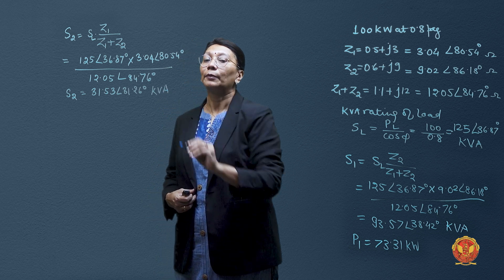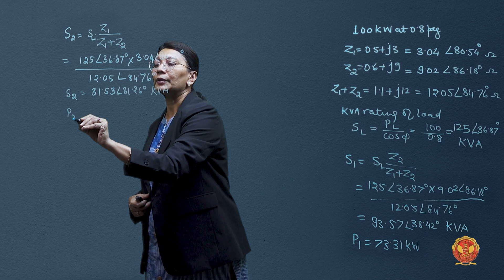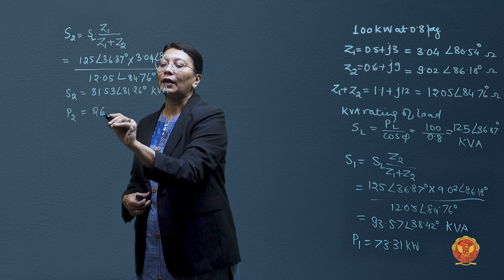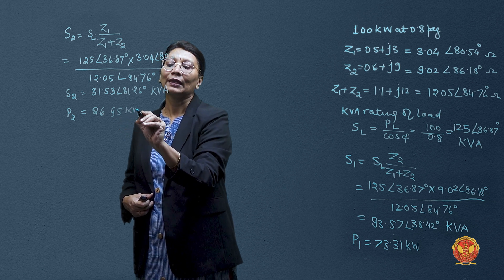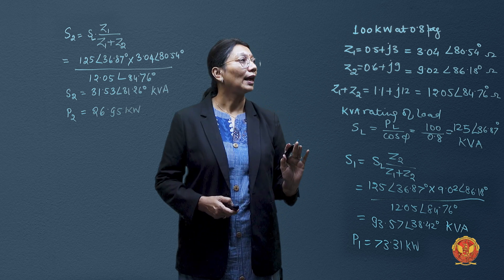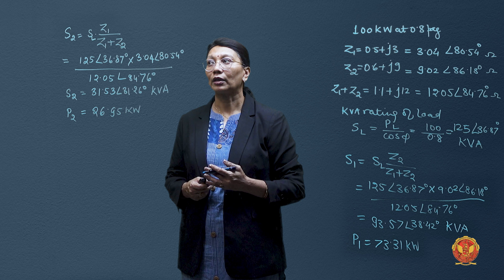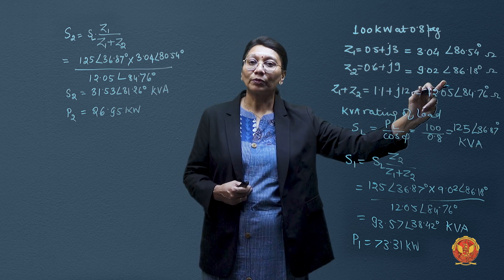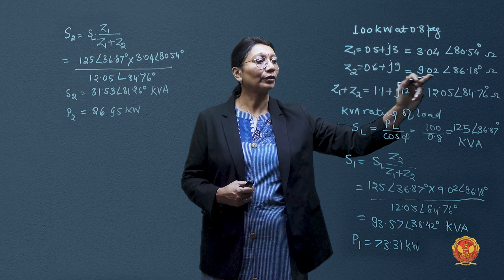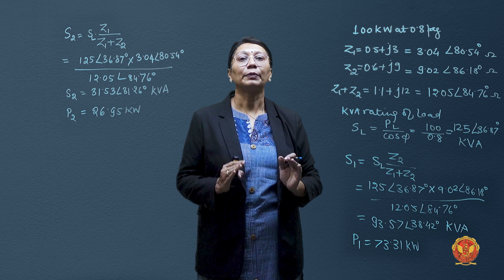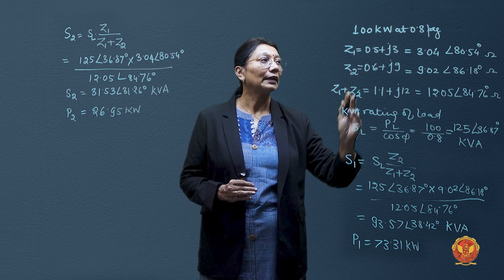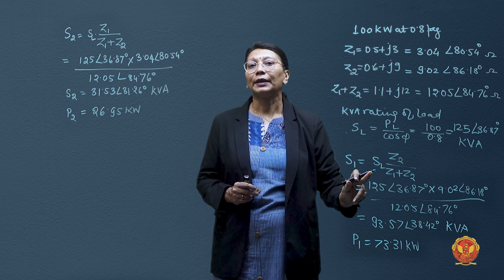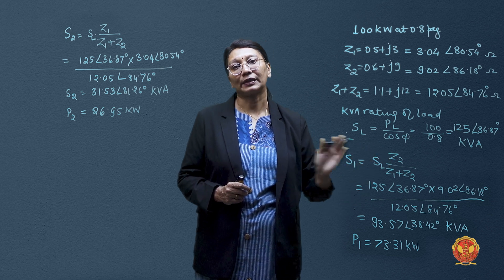This is the kVA value for the second transformer. Now if we want the load sharing in kilowatts, we compute: P2 = 31.53 × cos(31.26°), and we obtain the power as 26.95 kilowatts. This is how the numerical values come out. What we needed was the load sharing by both transformers. First, we converted impedances from complex to phasor form for easier addition and multiplication. Then we found the total impedance, calculated the kVA rating of the load, and used the load sharing equations to find the active power from the apparent power for each transformer.